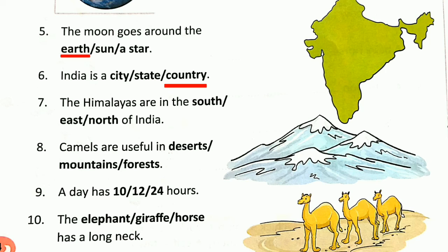Number 7: The Himalayas are in the south, east or north of India? The Himalayas are in the north of India. Number 8: Camels are useful in the desert, mountains or forest? Yes, camels are useful in the desert. Very good.